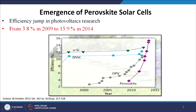Whereas the perovskite material, if we look at the growth phase, it is very very steep. The efficiency started with a very moderate number, somewhat around 3.8 percent, and rose to almost 15 to 18 percent in the time period from 2008 to 2016. So only in 5 to 6 years of research, the efficiency has increased significantly, and this number is increasing day by day. Today the efficiency of a perovskite solar cell is 22 percent.